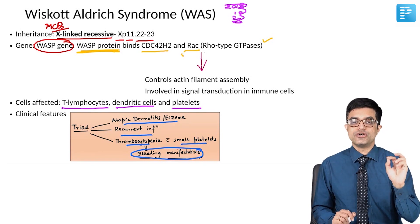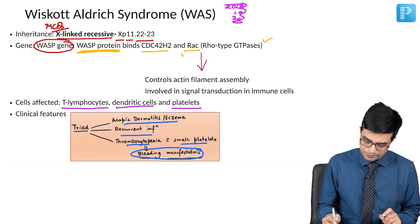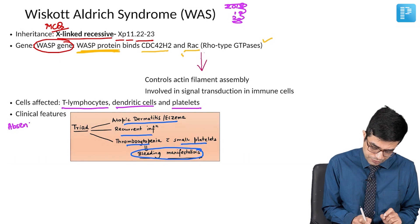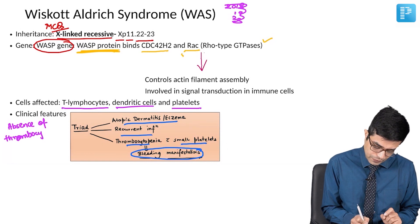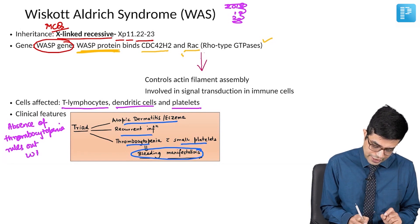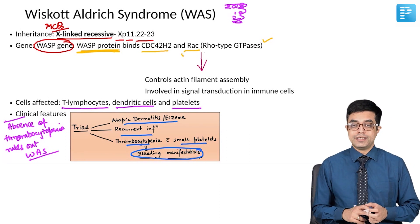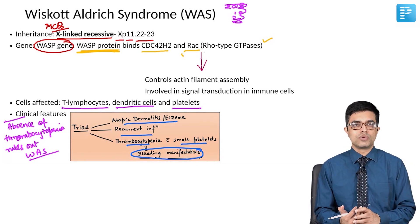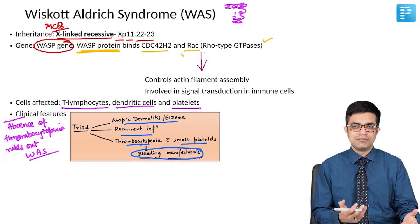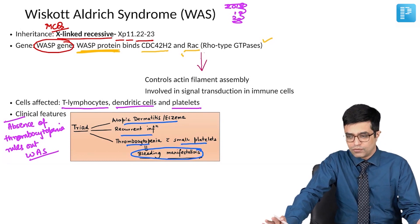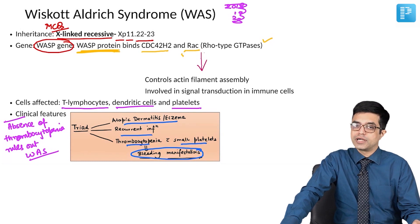Nelson's 21st edition has an important line: absence of thrombocytopenia rules out Wiscott-Aldrich syndrome. A normal platelet count virtually rules out Wiscott-Aldrich syndrome as the initial diagnosis. For entrance exams, we go by what standard books say, so absence of thrombocytopenia rules out Wiscott-Aldrich syndrome.